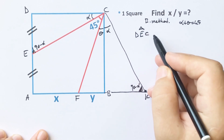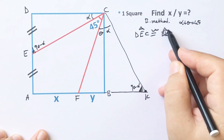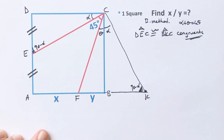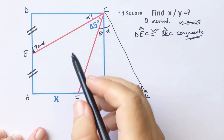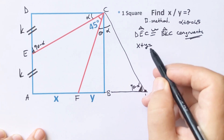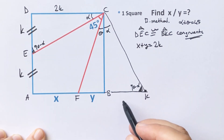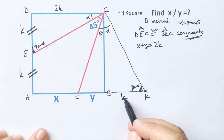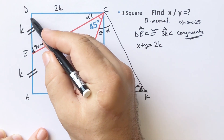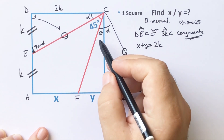Notice that these two triangles are congruent because they have the same angles and same length. So triangle DEC and triangle BKC are congruent. Therefore congruent triangles have the same sides and angles. Let's call the side opposite alpha as k. If these are k units, then x + y must equal k, so here must be 2k. The side opposite 90 degrees I'll represent with a circle sign.